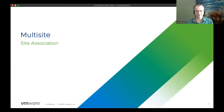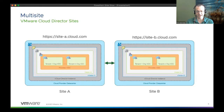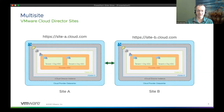The site association itself is an API process that a provider performs. Say a provider has had site A operational and has brought up site B and wants to leverage multi-site. To do the site association, the provider needs system admin access to both locations, both sites must communicate over the network, and they must have different instance IDs. Then they can join the sites. This is a one-time task to make sure the two sites know about each other.